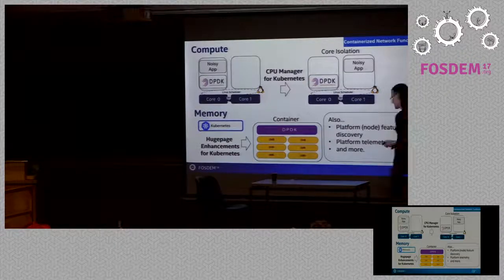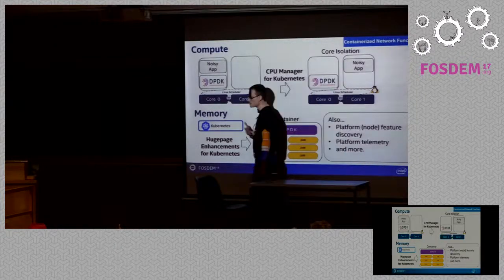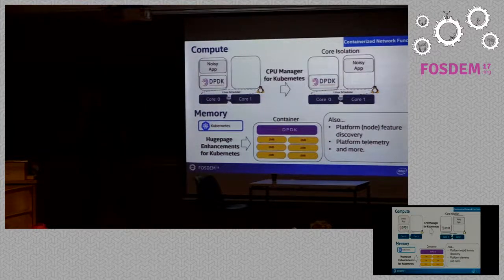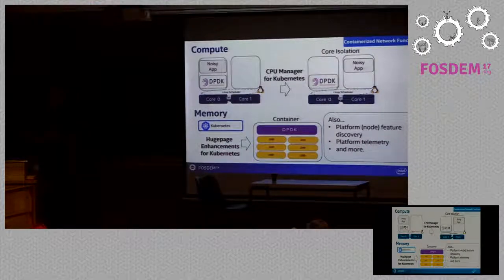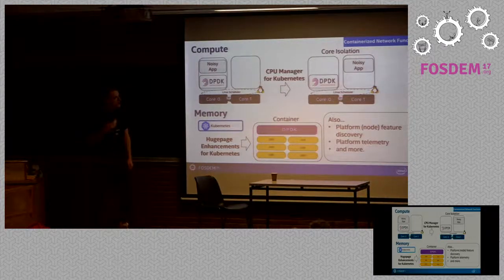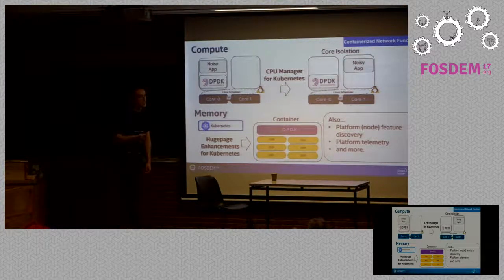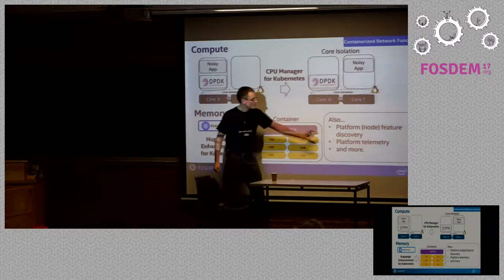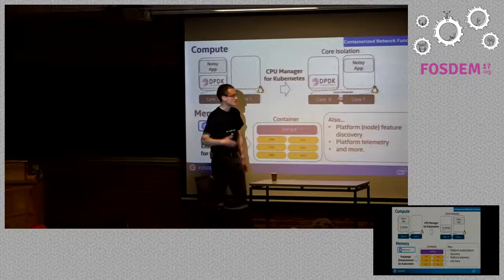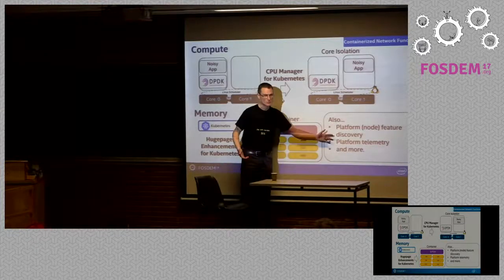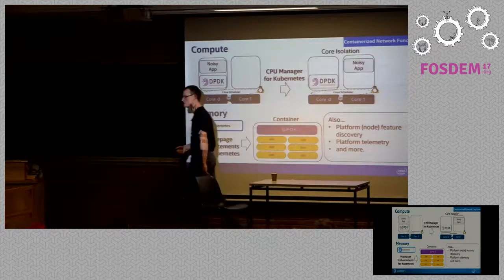We're also adding platform telemetry. A lot more platform characteristics influence whether you're going to have a good or bad experience on that platform. Exposing those platform telemetry metrics — it's more than just CPU usage or memory usage. It's how's your cache doing, how's your memory bandwidth doing, how's your PCI Express bandwidth doing — and we're exposing those up as well.